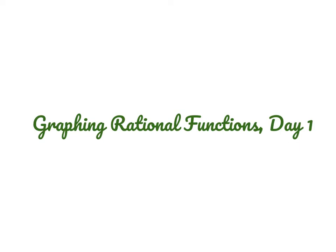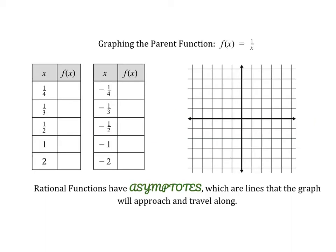Hi everyone, this is Mrs. G.A., and today we're going to start learning how to graph rational functions. We're going to start by graphing the parent function for our rational function family, and the parent function looks like this: f of x equals 1 over x.